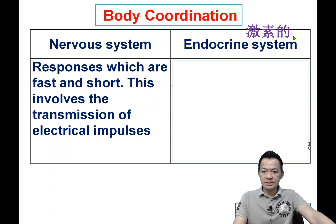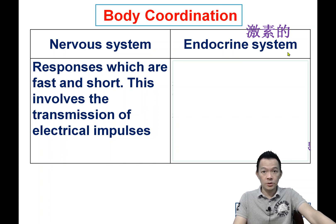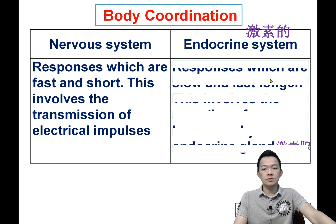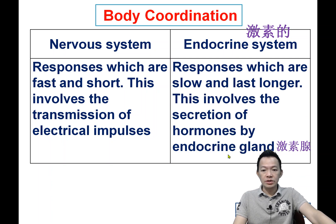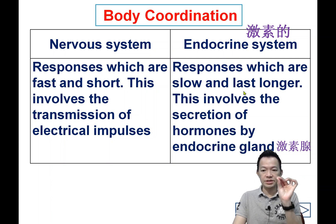What is meant by the endocrine system? You can call it the hormonal system. Using hormones, they control our body. Using hormones, we can control our body.